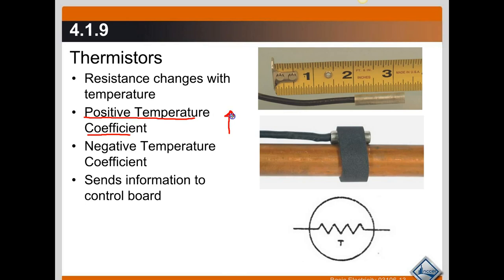Let's go over that again. Positive temperature coefficient thermistor: temperature rises, resistance rises. Negative temperature coefficient: temperature rises, resistance decreases. These are used exclusively to send information to a control board.